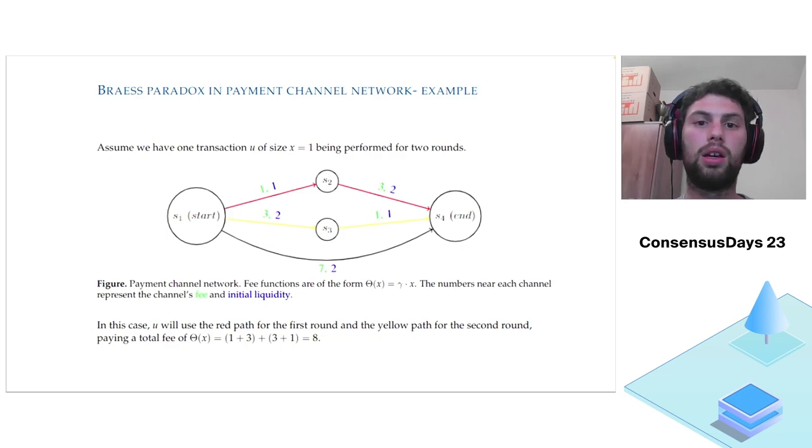Let's see an example. We look at the following network. Next to each channel appears the fee in green and the initial channel liquidity, which limits the availability of this channel. We assume there is one user, Yu, that wants to perform a transaction of size 1 from S1 to S4. We first analyze the case where the network looks this way without S2 to S3. We see that at the first round, Yu will use the red path from S1 to S2 and from S2 to S4. He will pay, in this case, 4. In the second round, he will use the yellow path from S1 to S3 and from S3 to S4. In this case, the total fee Yu will pay is 8.